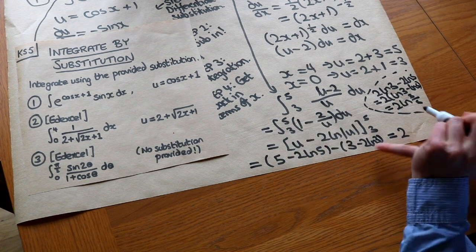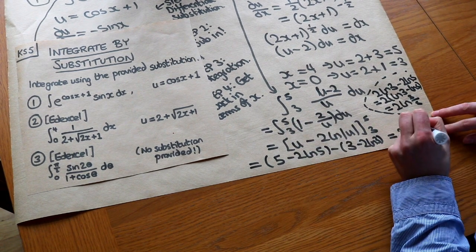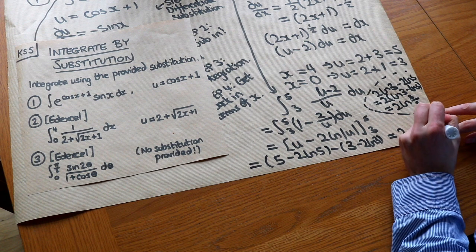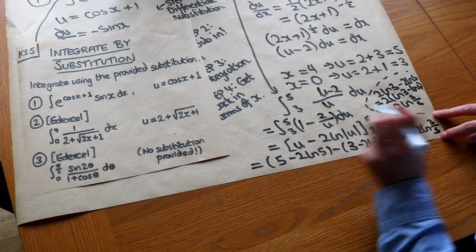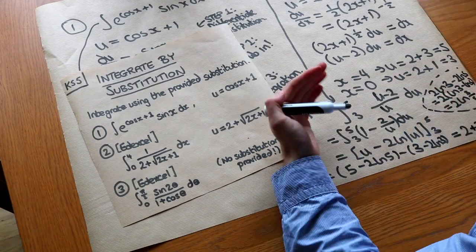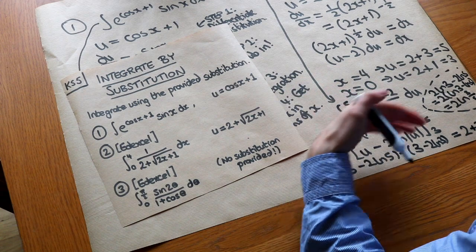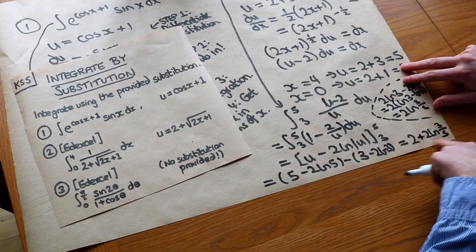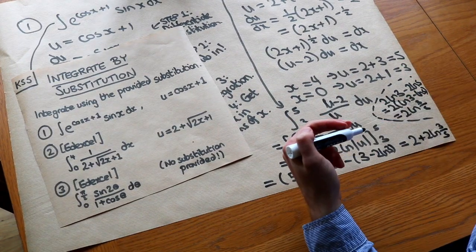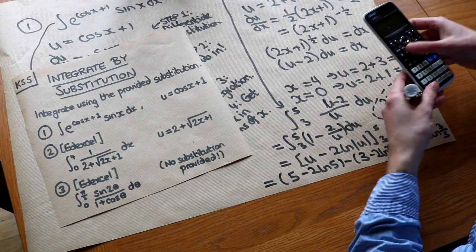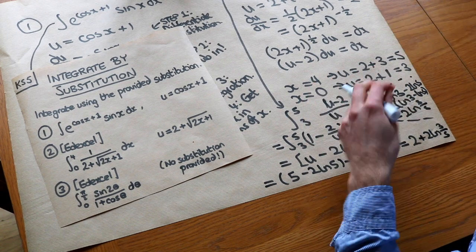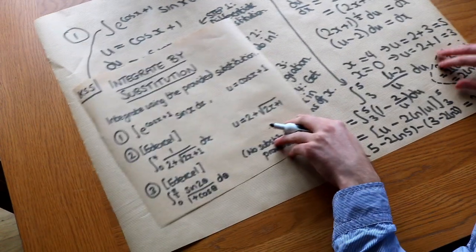We factor out the 2 to get 2 times (ln 3 minus ln 5), which by laws of logs becomes 2 ln(3/5). So the final answer is 2 plus 2 ln(3/5). Note that with integration you generally need the exact value, so we keep the ln — it's not sufficient to just use a calculator's integration button.